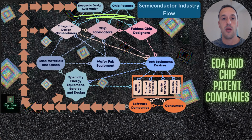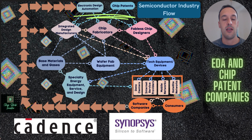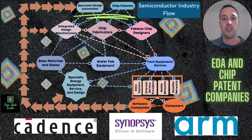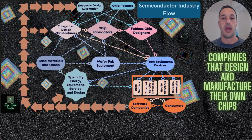I'll start from the top where you see the orange arrows flowing from the left to the right into electronic design automation, or EDA software, as well as chip patents. We just did a deep dive on Cadence Design and Synopsys — those are two of the three companies that make up the oligopoly in EDA software. You can think of it as CAD, computer-aided design, but for chips. Closely related, both of those companies dabble in chip patenting, as does ARM, the company that was about to have an IPO in 2023. Those EDA and chip patenting companies flow into the companies below them.